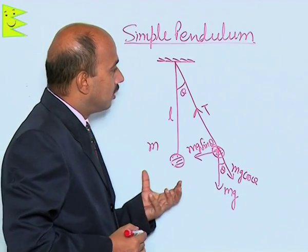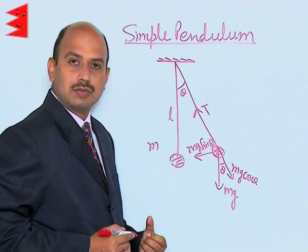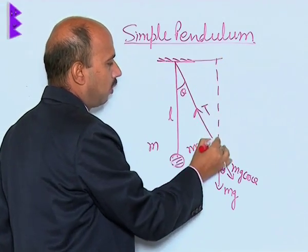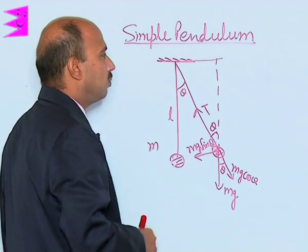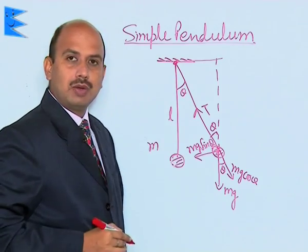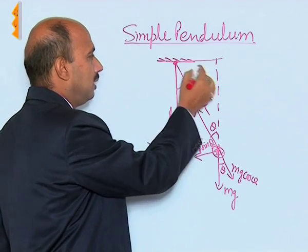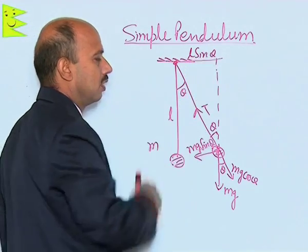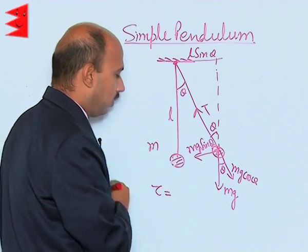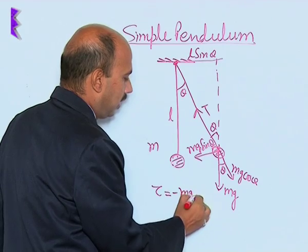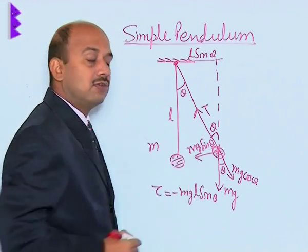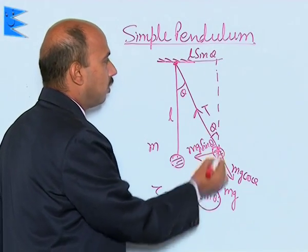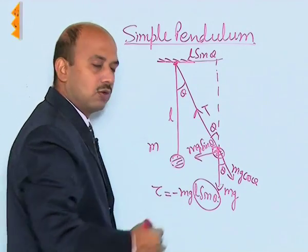Now we can calculate the total torque on this pendulum. The total length is L. The perpendicular distance from the pivot — this is the point about which the pendulum rotates — to the line of action of the force is L sin theta. So we can write the restoring torque is equal to minus m g L sin theta, because this torque tries to bring the body towards the mean position. L sin theta is the perpendicular distance between the axis of rotation and the line of action of the force.